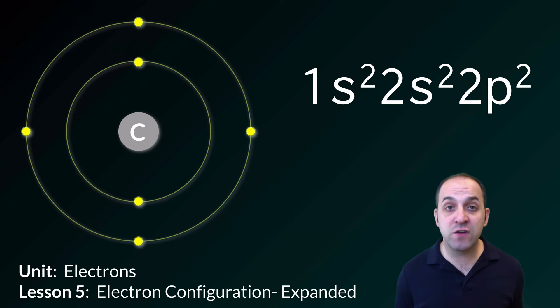Hi, welcome to our third discussion of electron configurations here in our unit on electrons. Here we're going to deal with expanded configurations. So once again we see carbon, and here's carbon's expanded electron configuration. Let's go in and take a look and see how this differs from the configurations we've talked about up to this point in time.